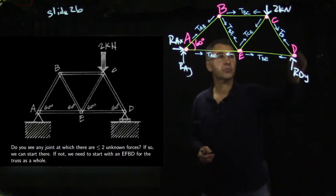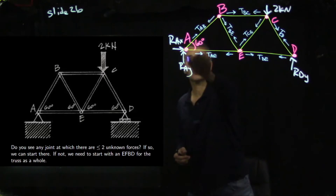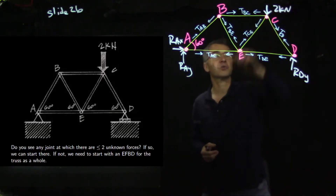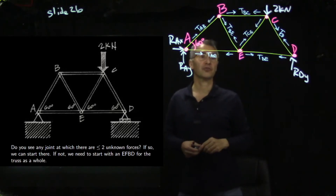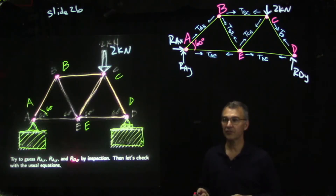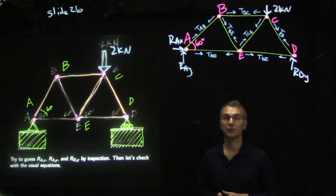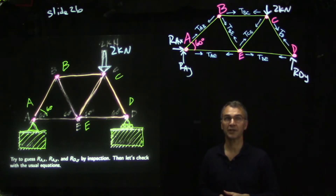We have three external reaction forces and one external load force; all the tension forces are internal and won't concern us right now. By inspection: R-A-X is zero, R-A-Y and R-D-Y add up to two kilonewtons, and R-D-Y is three times closer to the load than R-A-Y. So R-D-Y will be three times as big — giving R-D-Y equals 1.5 kilonewtons and R-A-Y equals 0.5 kilonewtons.